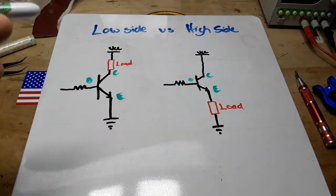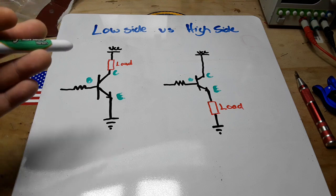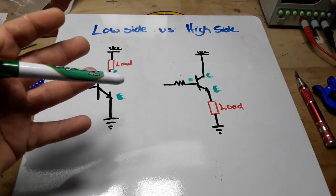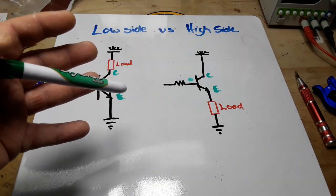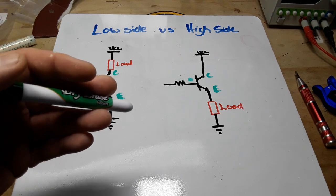So just as an easy rule to do this, if you're turning a device on and off, a low side switch is the way to go. However, if you're delivering power to an entire circuit or something that's going to be voltage sensitive where you need ground to be zero volts, then you want to use the high side circuit.